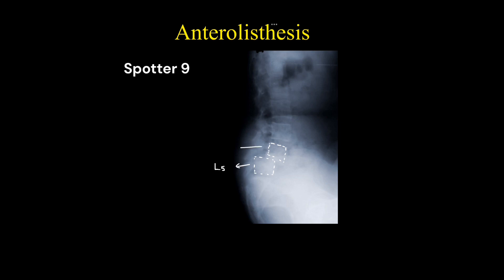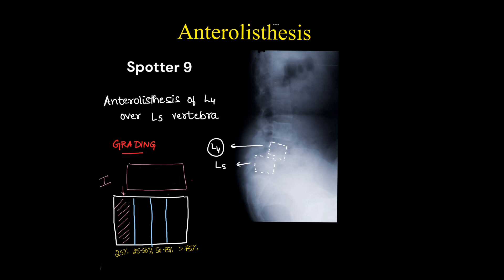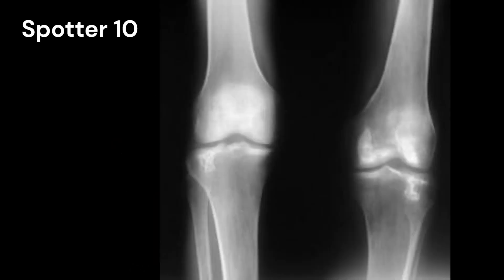This is anterolisthesis of L4 over L5. The superior vertebral body is always taken as the listhesis over the inferior. In grading, the lower vertebral body, that is L5, is divided into 4 parts: 25%, 25-50%, 50-75%, and above 75%. If the upper vertebral body is displaced within 25%, it is grade 1; 25-50% is grade 2; 50-75% is grade 3; and above 75% is grade 4.